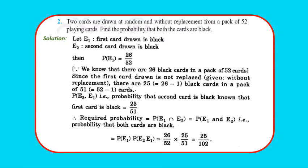Find the probability that both cards are black. Let E1 be the event the first card drawn is black and E2 the second card is black. P(E1) = 26/52. Since one black card is taken, remaining black cards = 25, total remaining = 51, so P(E2|E1) = 25/51. Therefore P(E1∩E2) = 26/52 × 25/51 = 25/102.